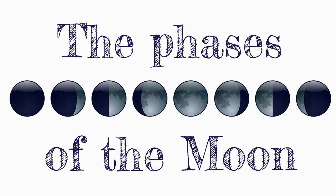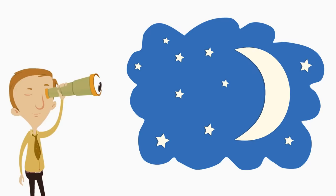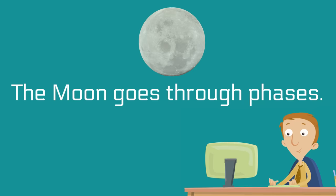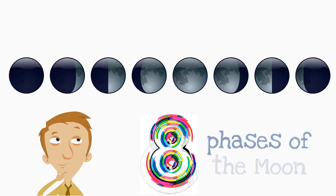The phases of the moon. Ever wonder why sometimes the moon looks like this? You might think, hey, that's just what the moon looks like. And other times the moon might look like a complete circle. What's going on? Well, the moon goes through phases. The phases change what the moon looks like to us here on Earth.